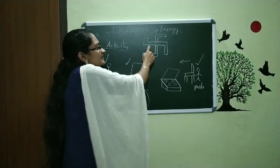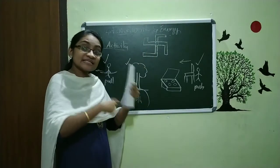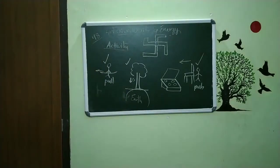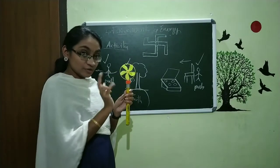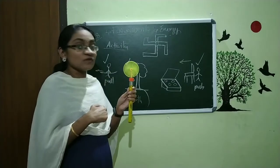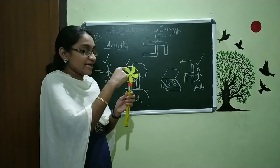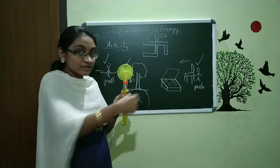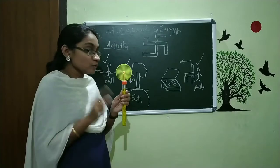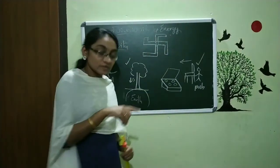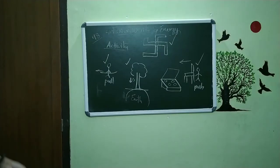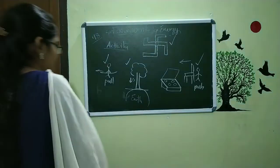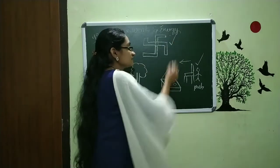The windmill gets rotated when force is acting. When no force is acting, this wheel has no motion. When the wind blows — just as I am giving force by my hand now — this wheel starts to rotate. The same thing happens with the windmill; the force is given by the wind. So the tick mark is for pictures one, two, four, and five. We are not giving a tick for the third.